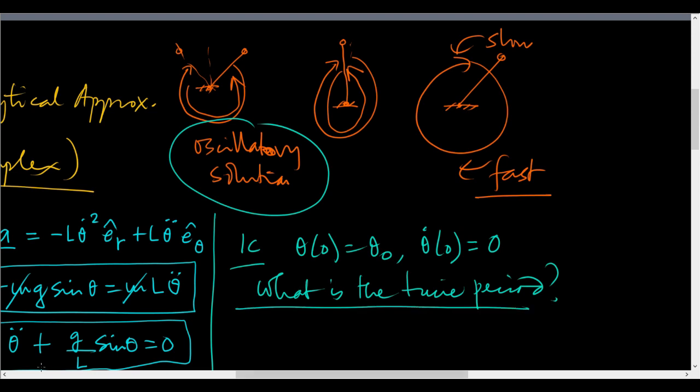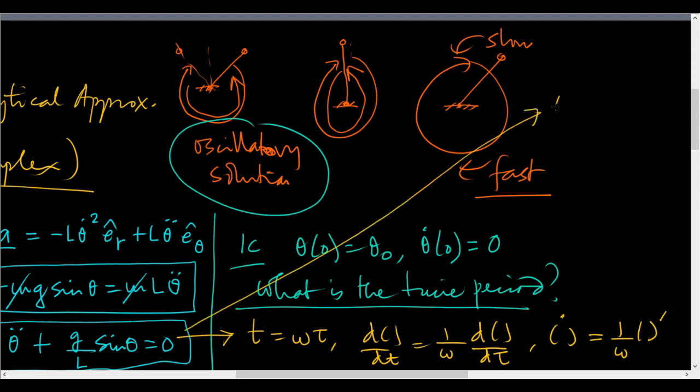Now we will make a small transformation in this equation. We will say let t be equal to omega tau, then d of anything dt equals 1 by omega t of that same thing by d tau, which we will write as anything dot equals 1 by omega that same thing prime. When we do that, our equation becomes theta double prime plus sin theta equals 0 for omega equals square root of l by g. And so when we solve this problem, we have really solved it for all l, all g and all m.